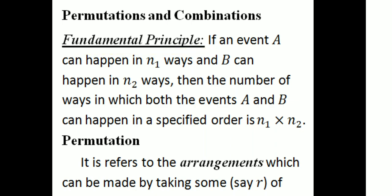Then, the fundamental principle: if an event A can happen in N1 ways and event B happens in N2 ways, then the number of ways in which both events A and B can happen in a specified order is N1 cross N2, that is N1 into N2.